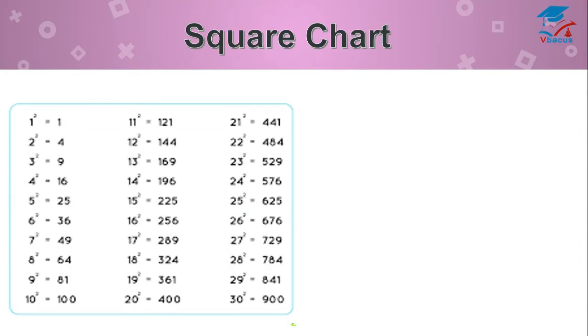This is the chart. Square of 1 is 1, square of 4 is 16, square of 8 is 64, square of 13 is 169, square of 18 is 324, square of 23 is 529, square of 27 is 729, and square of 30 is 900 and so on.